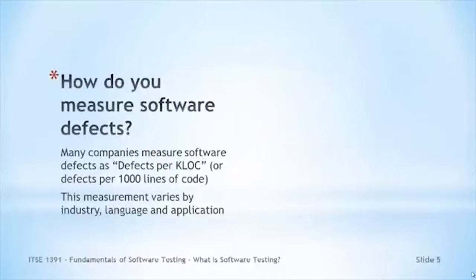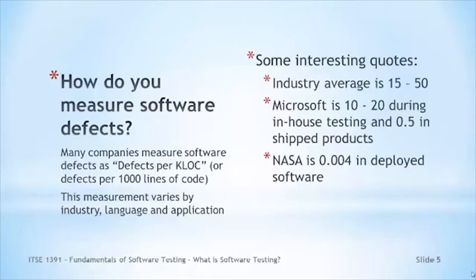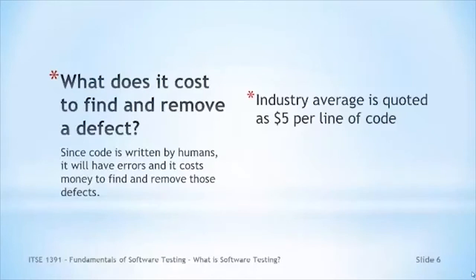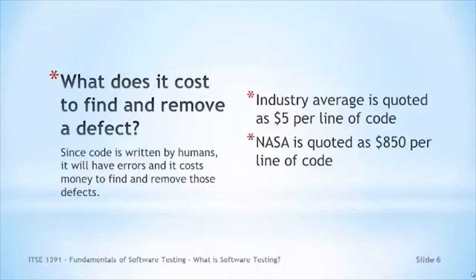So how do we measure software defects? Most companies measure it as defects per KLOC, or defects per thousand lines of code. It varies by industry, language, and application, but that's the most common measurement. Some interesting figures: the industry average is 15 to 50 defects per KLOC. Microsoft is 10 to 20 during in-house testing and 0.5 defects per KLOC in products they ship. NASA is 0.004 in deployed software.